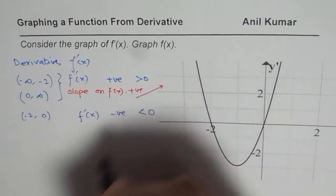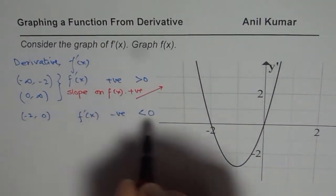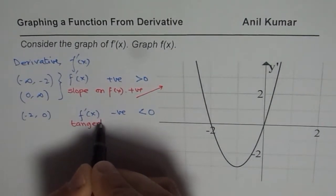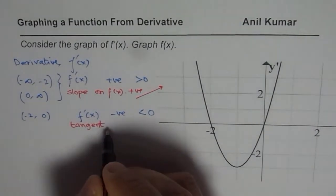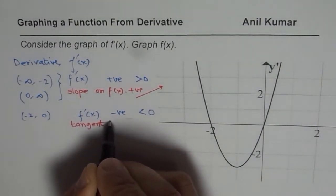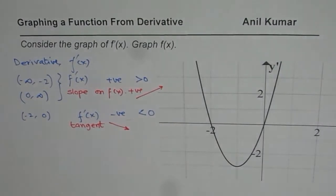So that means it is rising. Derivative negative means that if I draw a tangent at any point, the tangent in this interval will be negative, means going downward. This is one part which you understand.